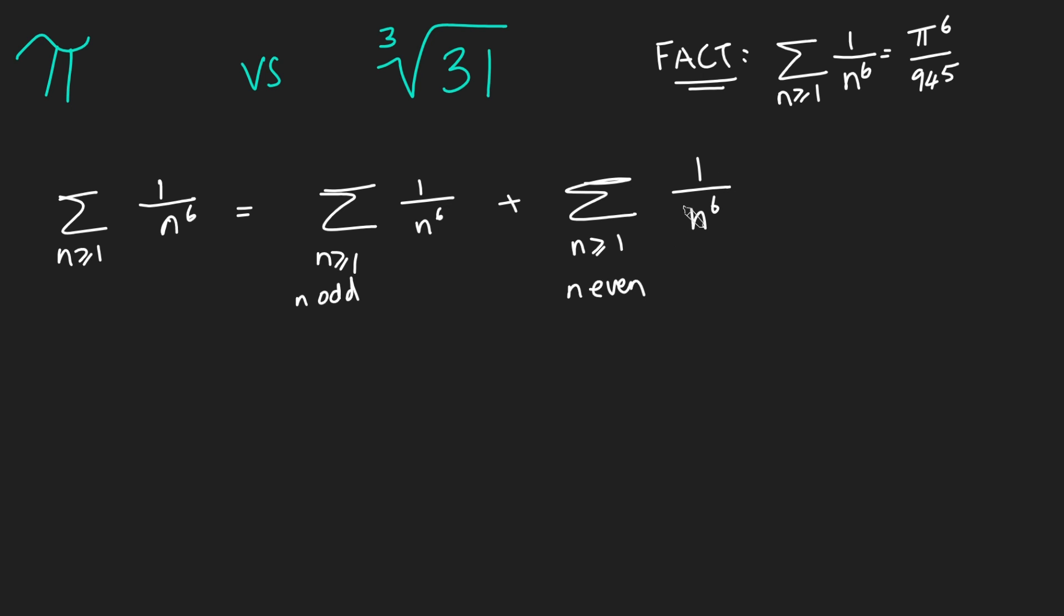Okay, cool. And the great thing about this is this even term here, I can say is this. So the sum from n is at least 1 of n odd of 1 over n to the 6 plus, and each of these terms are even, so I can strip out a 2 to the 6 from the denominator here. So plus 1 over 2 to the 6 of the sum from n is bigger than or equal to 1 of just 1 over n to the 6.